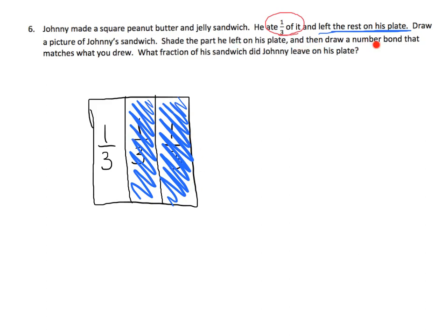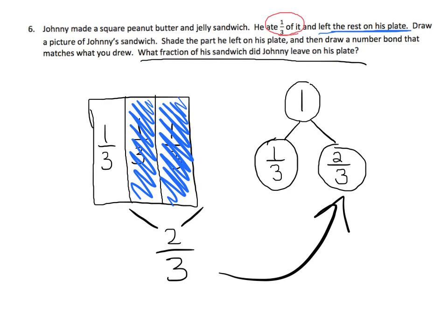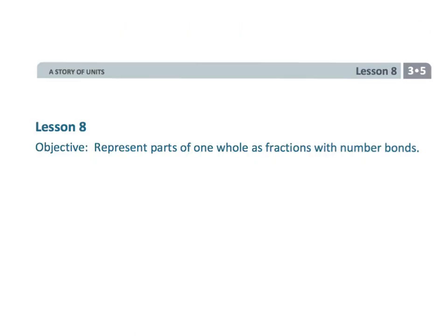Draw a number bond that matches what you drew. We're going to start with the number one because that's the whole thing. We can see that he ate one third and he left two thirds. What fraction of his sandwich did Johnny leave on his plate? The part that he left on his plate is two thirds — we knew that because that was the number bond we drew. That wraps up grade three, module five, lesson eight.